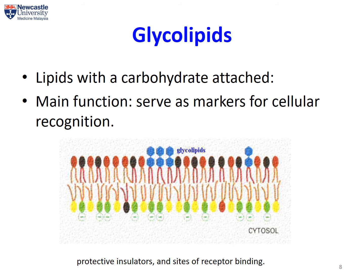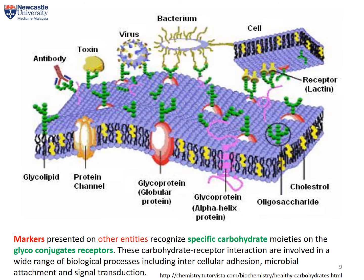When sugars are attached with lipids they form glycolipids, and the majority of glycolipids in the cell are found on the surface, which is the plasma membrane, because the major constituents of the plasma membrane are phospholipid molecules. There are two important roles of glycolipids: number one, to serve as a site for cell recognition, and number two, to serve as a protective layer for the cell.